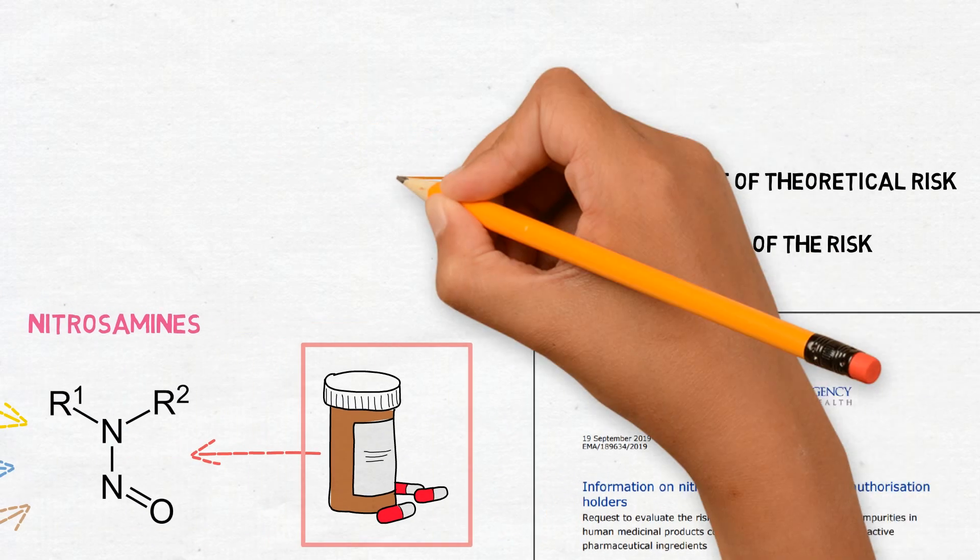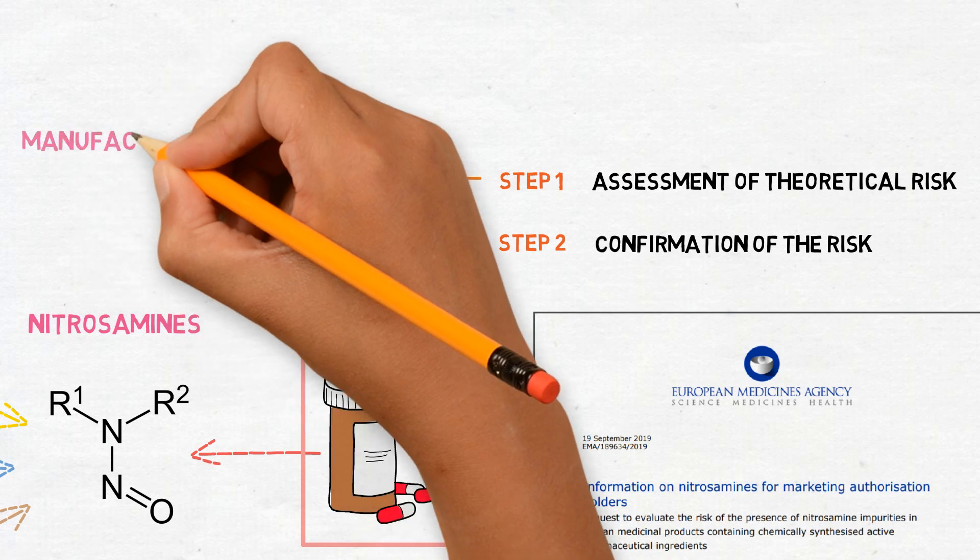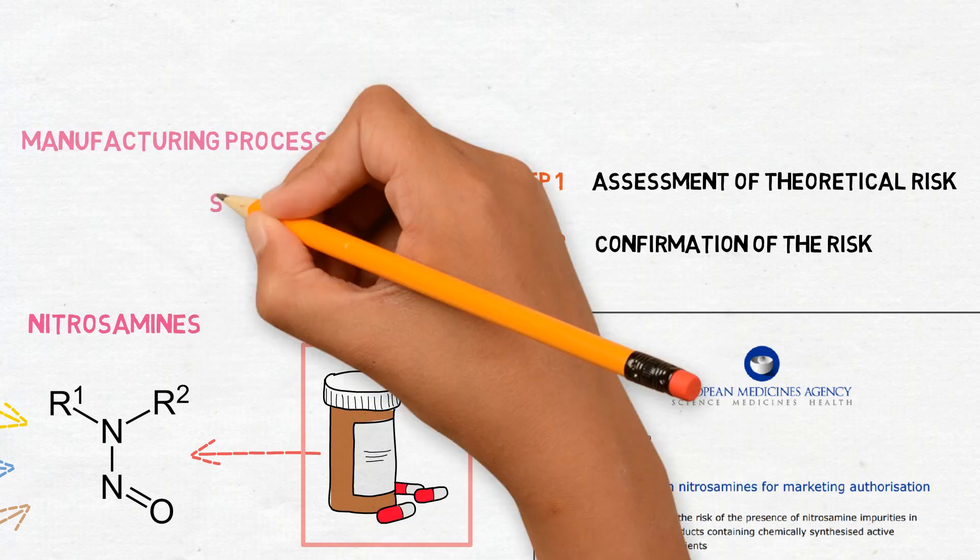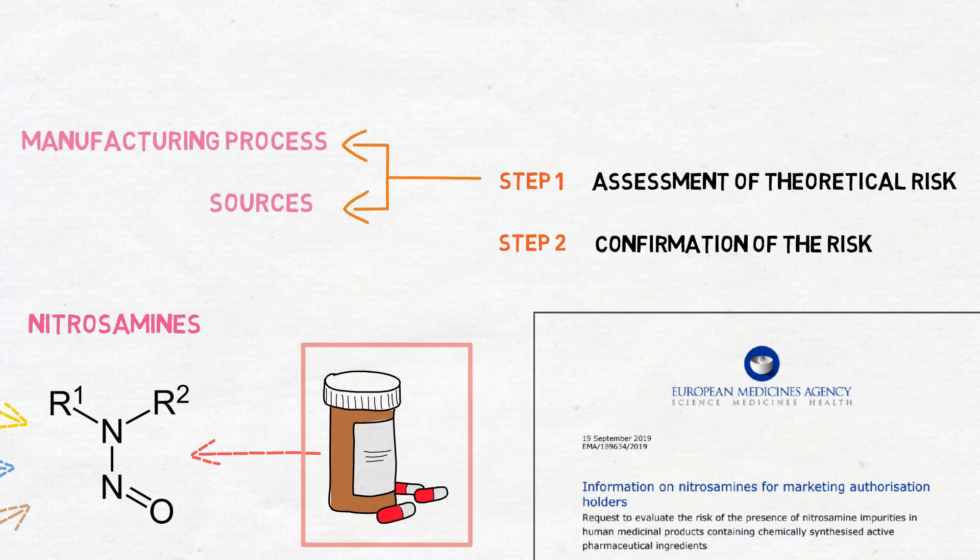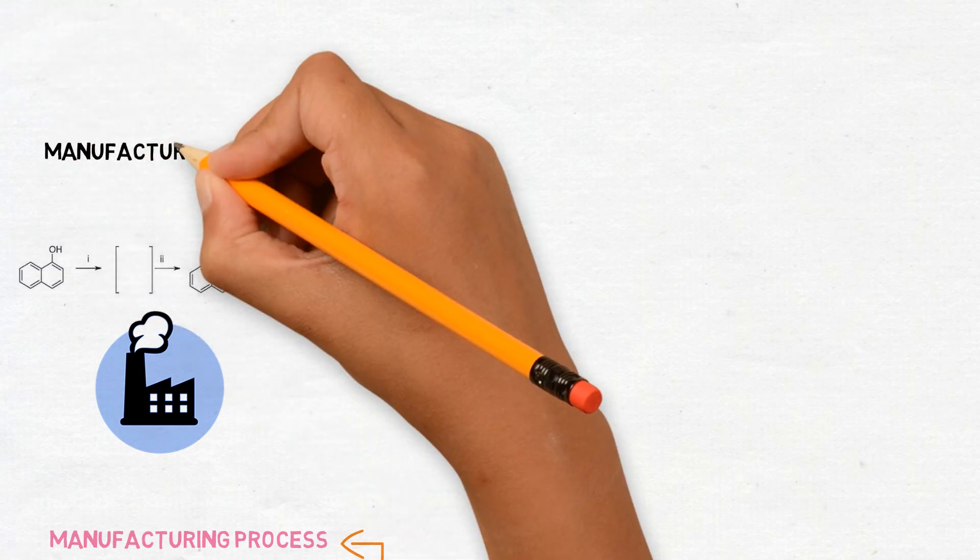But how should this evaluation be done? In Step 1, the whole manufacturing process must be considered and all the potential sources of nitrosamines must be identified. The manufacturing process of a drug product begins with the manufacture of the drug substance.